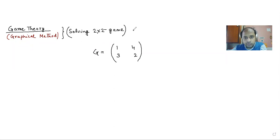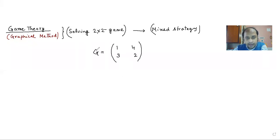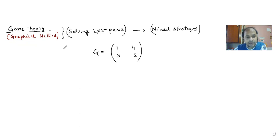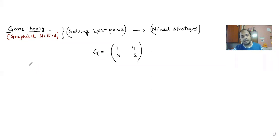With the graphical method, we try to find out the mixed strategy of the players. Since it is a matter of finding mixed strategy, it happens only when the pure strategy of the game doesn't exist. For the algebraic method, we first tested the game with respect to von Neumann maximin and minimax criteria, and when the saddle point didn't exist, we went for the algebraic method. The same structure will be maintained in the graphical method.